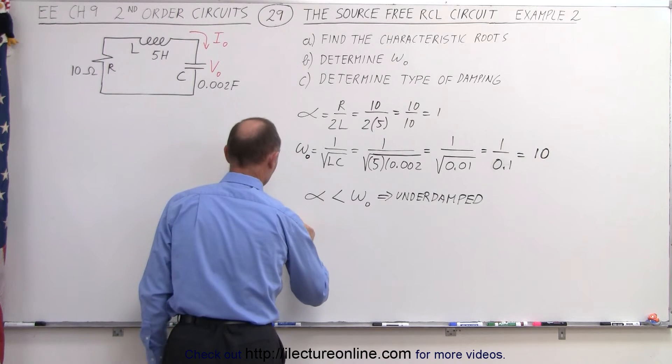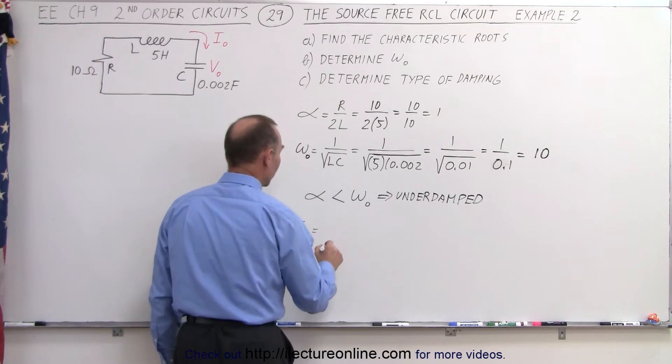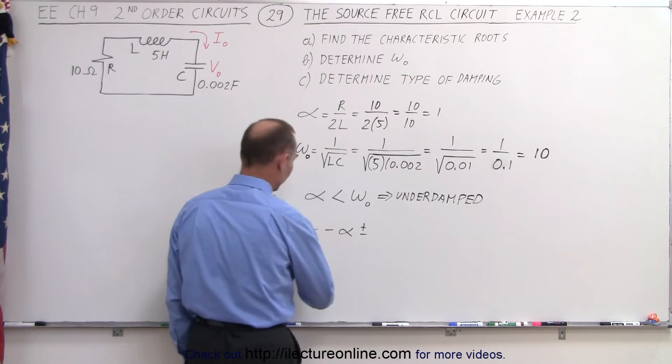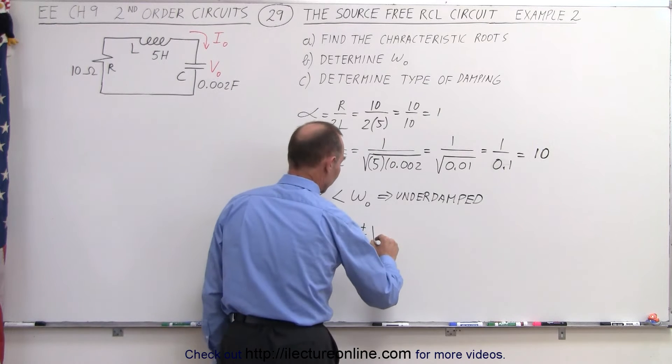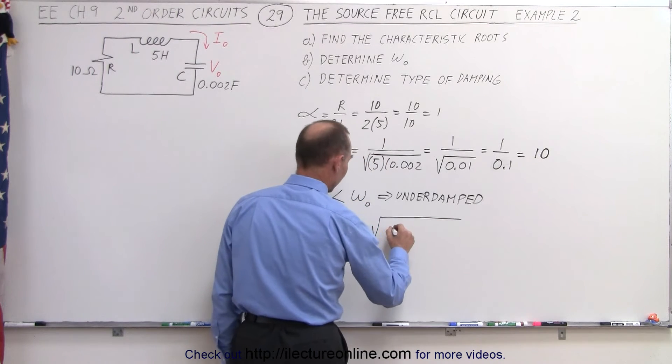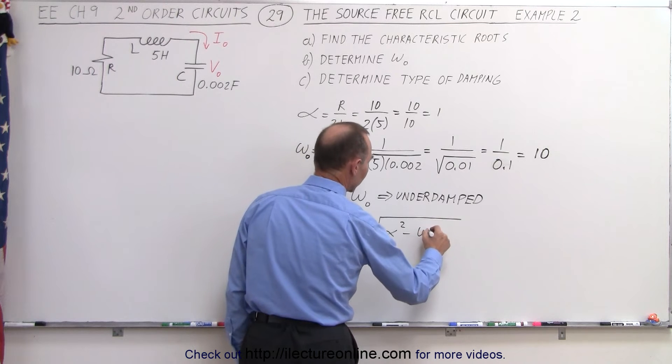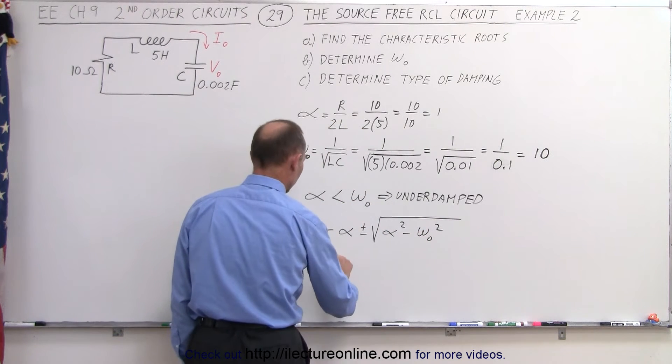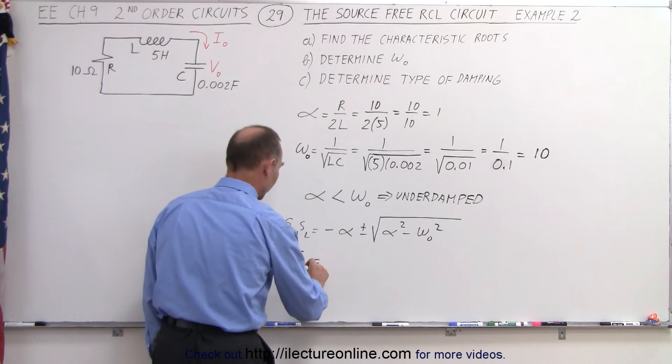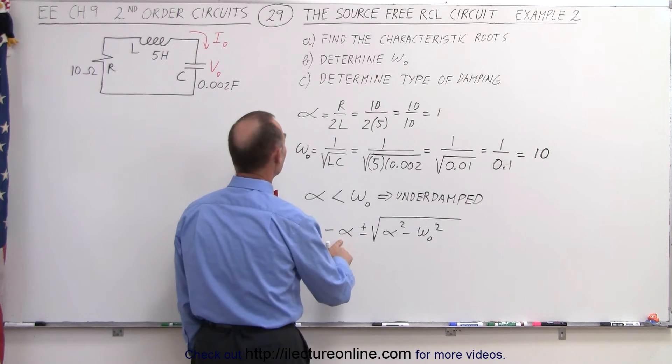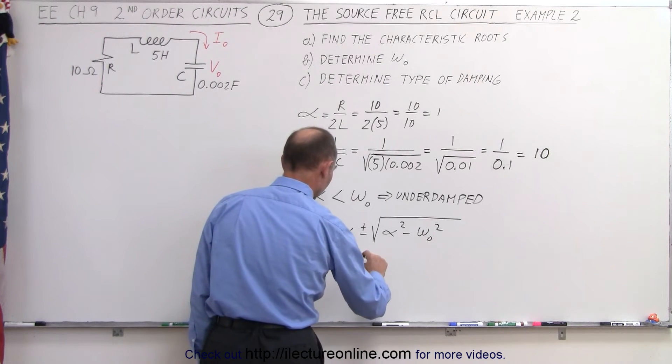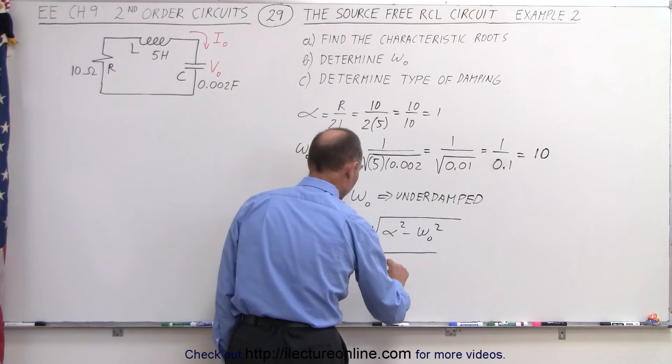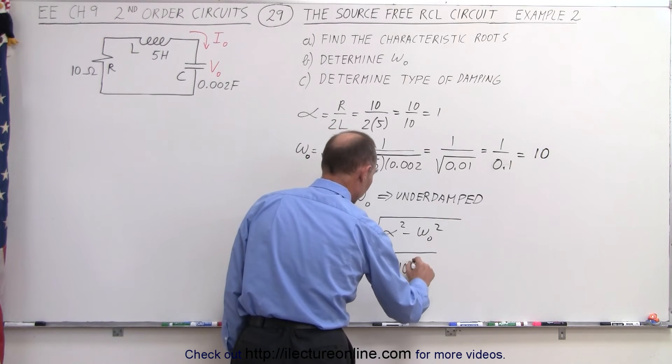We can see that S1 and S2 can be determined by taking the negative of the damping factor and then plus or minus, plus for the one, minus for the other, times the square root of the damping factor squared minus the natural frequency squared. So in this case, for S1, we'll take it one at a time. For S1, we have the negative damping factor of 1, so we have minus 1 plus or minus the square root of 1 squared minus omega squared, which is 10 squared.